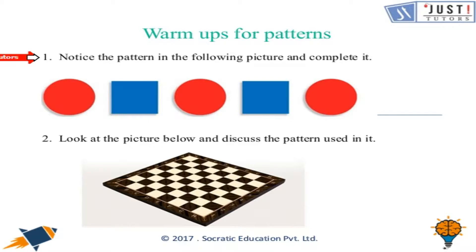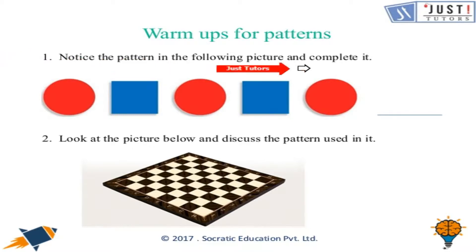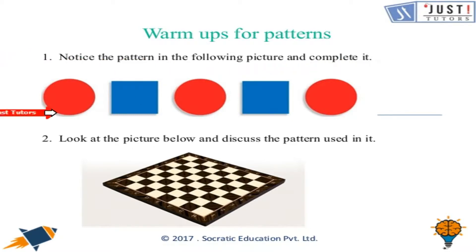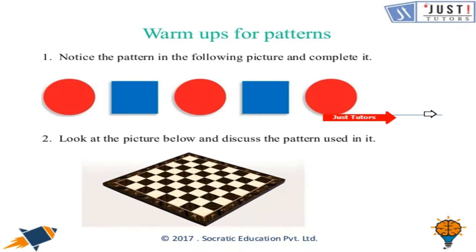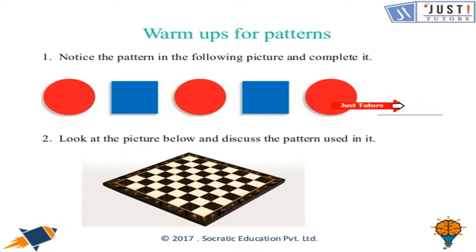Question one: notice the pattern in the following picture and complete it. You have a red circle, then a blue square, then a red circle, then a blue square, then a red circle — and to complete the pattern, you will have a blue square at the end.